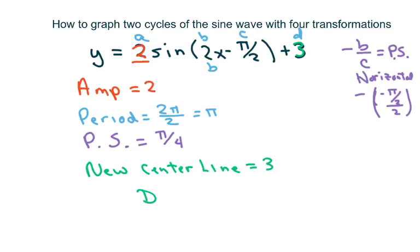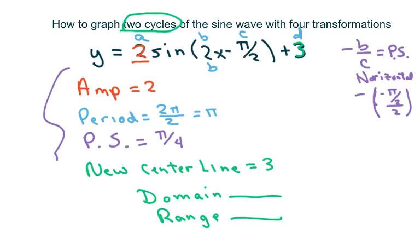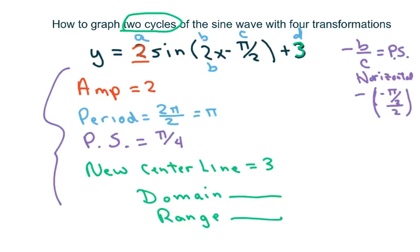We're also going to have to find the domain and the range, and we'll do that after we graph. We have to graph two cycles. So what you're going to do is first graph our new center line, which is y. Oops, I even wrote this down wrong. The new center line isn't just 3. It should be y equals 3.